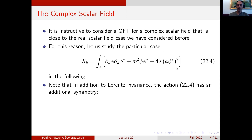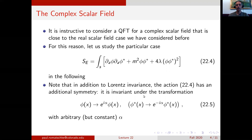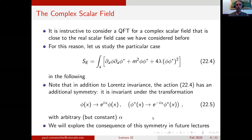Writing down this action we find that besides the requirements that the action is real and is invariant under Lorentz transformation, this particular form has an additional symmetry. In particular, if we consider transformations where phi goes to e to the i alpha phi and correspondingly phi star goes to e to the minus i alpha phi star, with arbitrary but constant parameter alpha, the action 22.4 is invariant under this transformation. We will explore the consequence of this additional symmetry in future lectures.